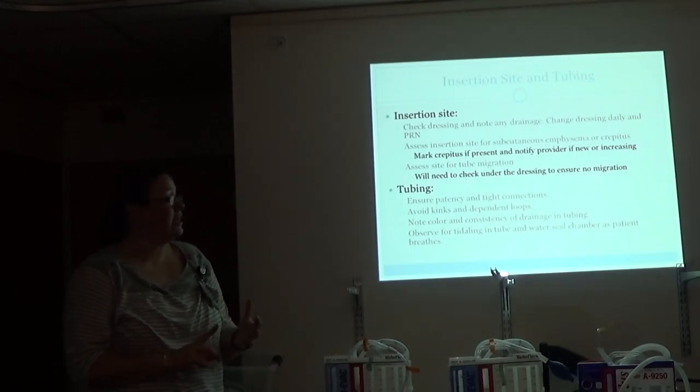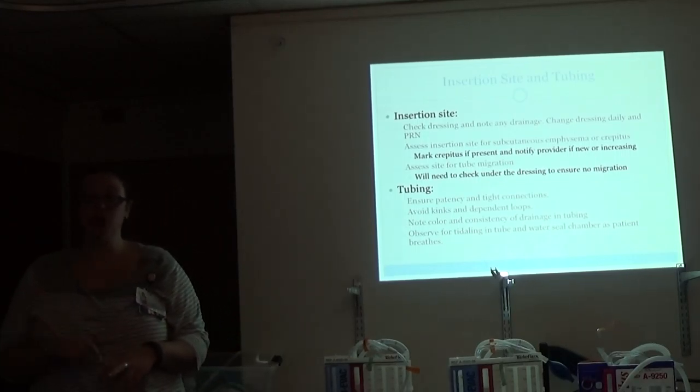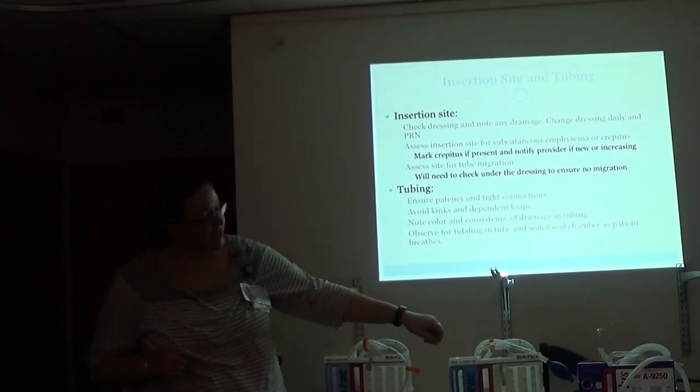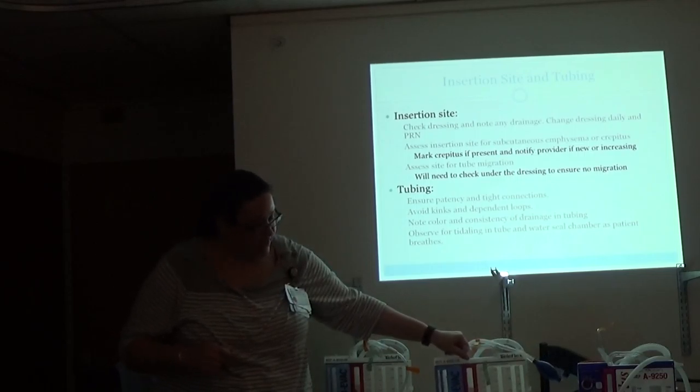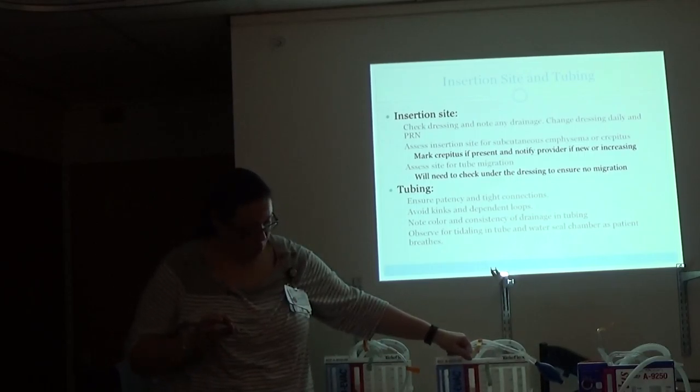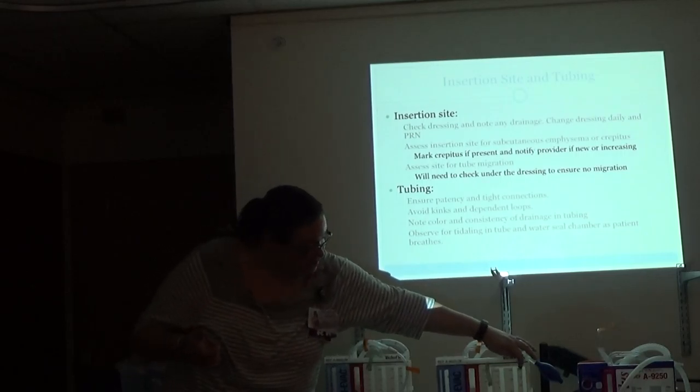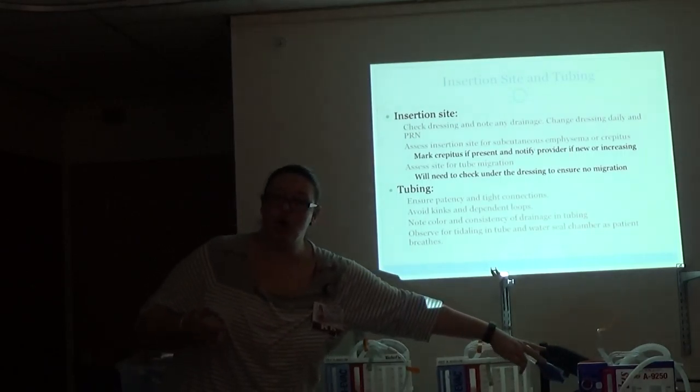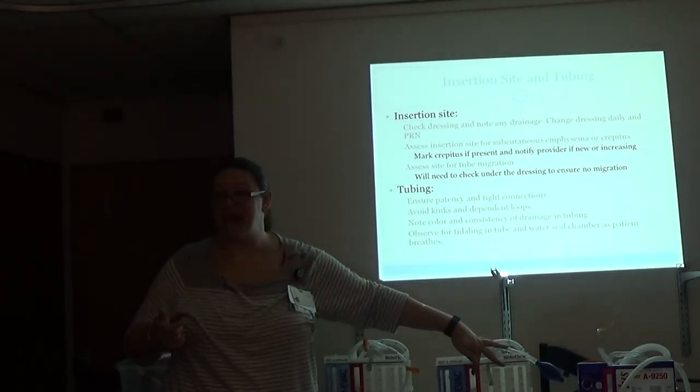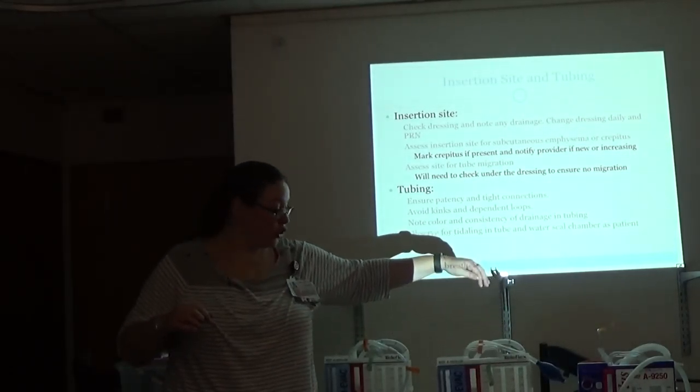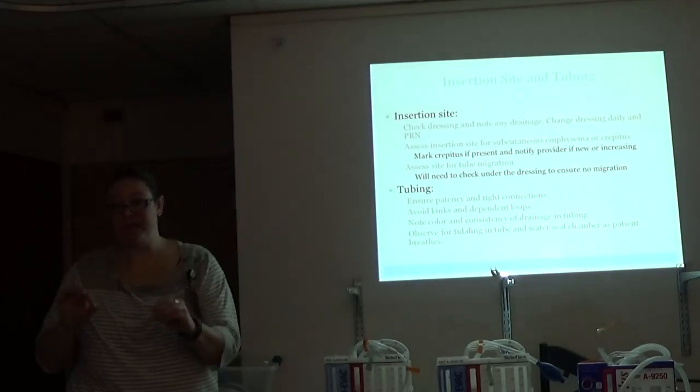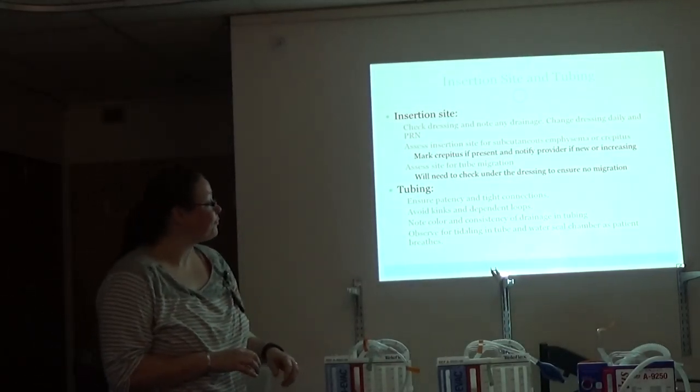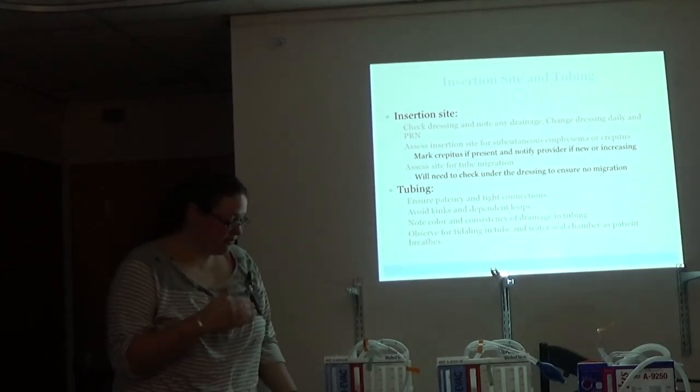Tubing, make sure that it's patent. All of your connections are tight. Avoid kinks or dependent loops. And note the color and consistency of the drainage in the tubing. And that's important because sometimes as things resolve or new things develop, your drainage, all drainage ends up in this column first, and then it's overflow that ends up in further columns out. So it's important that your drainage in the tube is the most recent drainage from your patient. And then observe for titling.